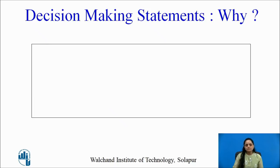Now, what are these decision making statements and why do we need them in C? Many times in real life we need to take decisions based on certain conditions. For example, if the highway is busy I may take a diversion, or if the climate is cloudy I may carry an umbrella with me.